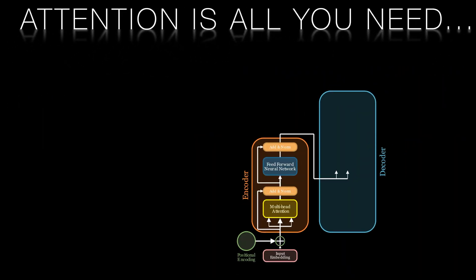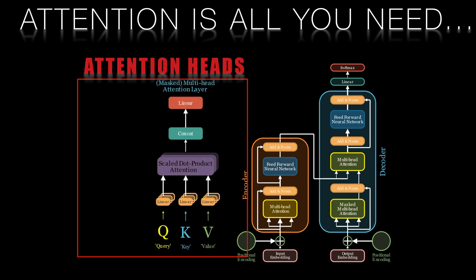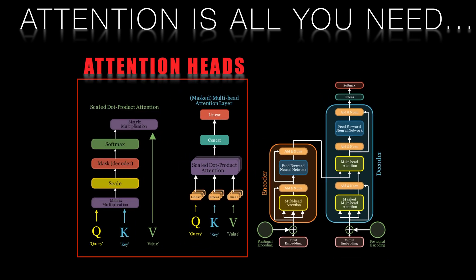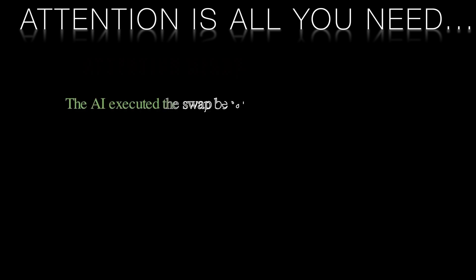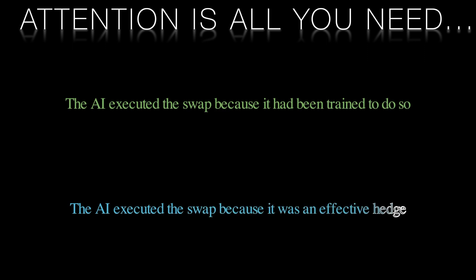A key component of LLMs like GPT-4 is their so-called attention heads. These components allow the models to learn and use associations between words and concepts in text, enabling them to process massive amounts of data efficiently. Consider these two sentences. One, the AI executed the swap because it had been trained to do so. And two, the AI executed the swap because it was an effective hedge.